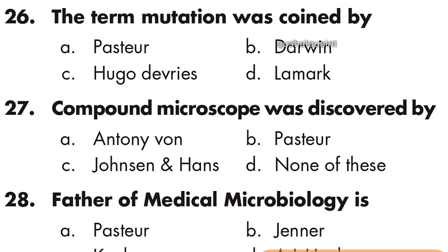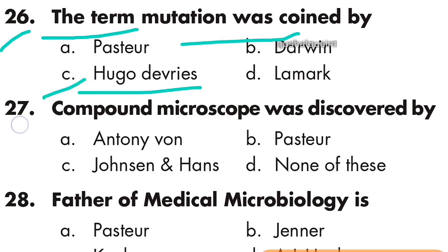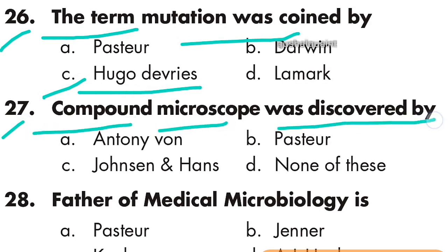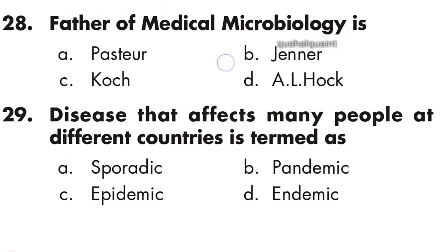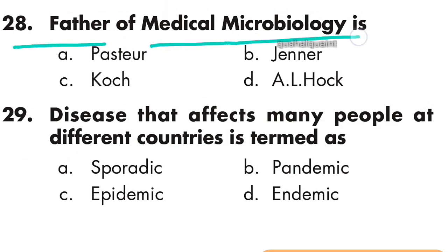Question number 26: The term 'mutation' was coined by Hugo de Vries. Option C is right — Hugo de Vries. Question number 27: The compound microscope was discovered by Janssen and Hans. Option C is right — Janssen and Hans.